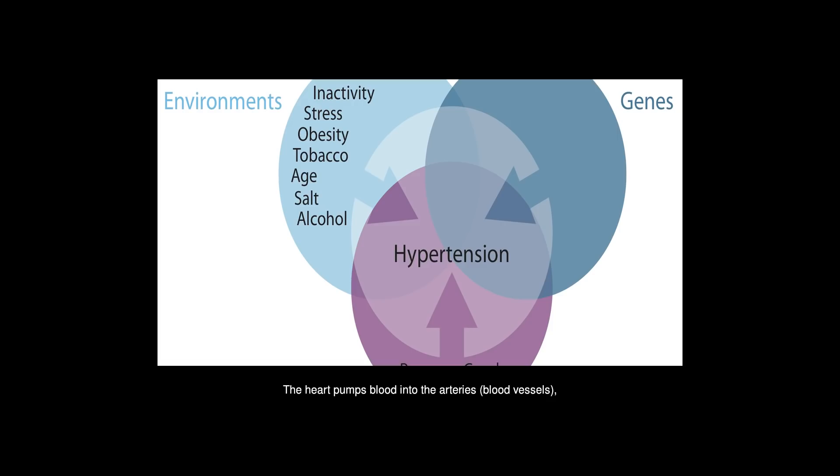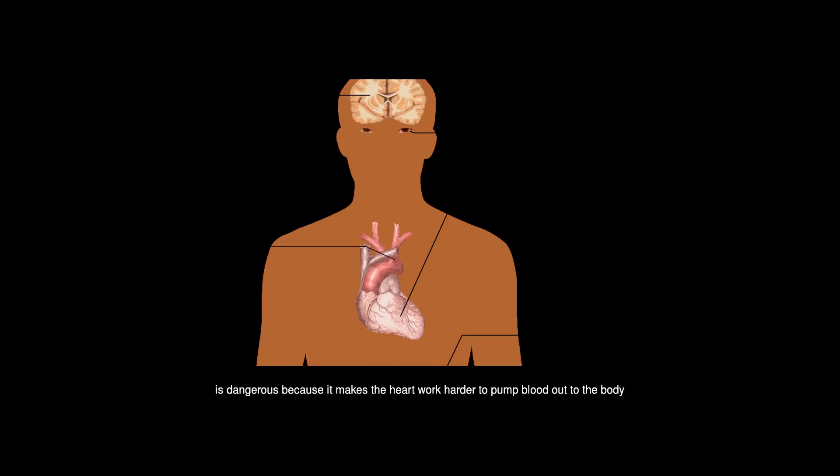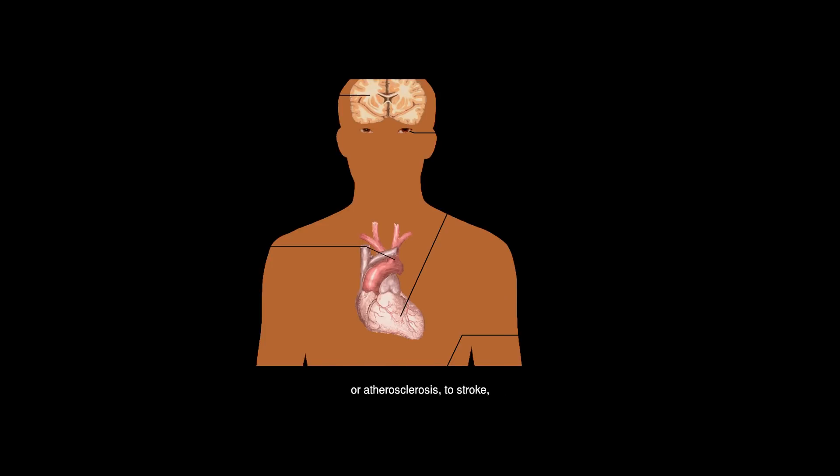The heart pumps blood into the arteries, blood vessels which carry the blood throughout the body. High blood pressure, also called hypertension, is dangerous because it makes the heart work harder to pump blood out to the body and contributes to hardening of the arteries, or atherosclerosis, to stroke, kidney disease, and to the development of heart failure.